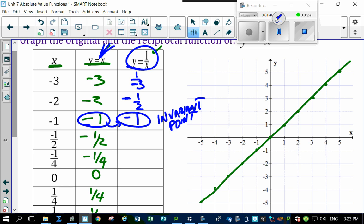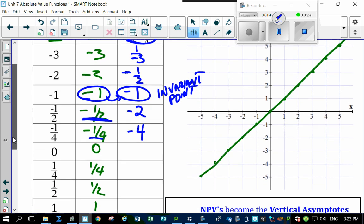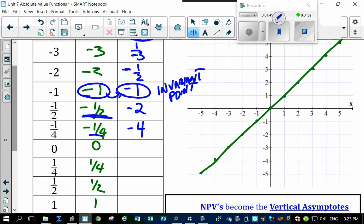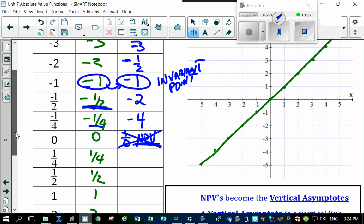Reciprocal of that, that becomes minus 2. Reciprocal of that becomes minus 4. Wait a second. What's the reciprocal of 0? Uh-oh. Non-permissible value. You can't have that one. So let's keep on going.